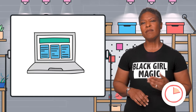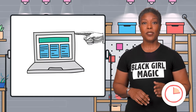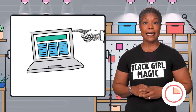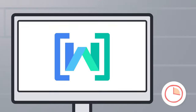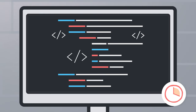A physical machine is, well, physical. You can touch it, see it — it's a tangible thing. A virtual machine exists only as code, a software-defined computer that is running on top of a specialized operating system called a hypervisor.